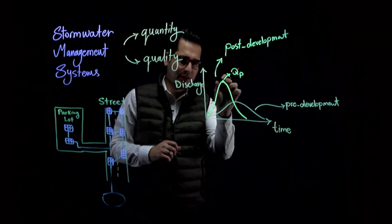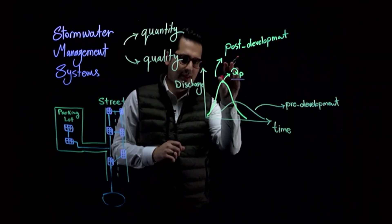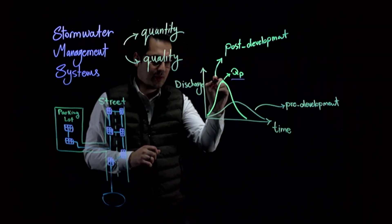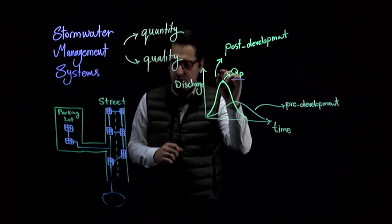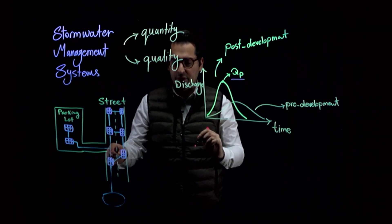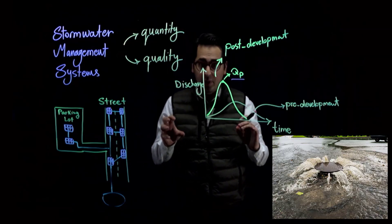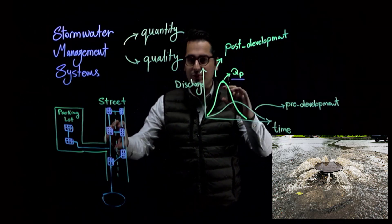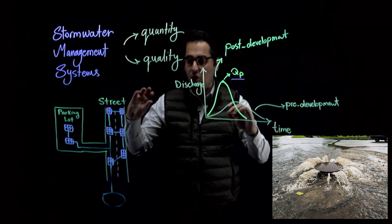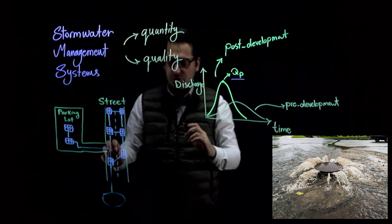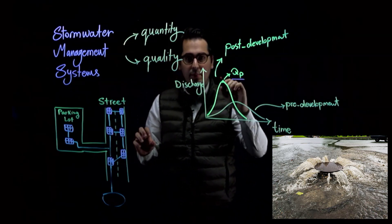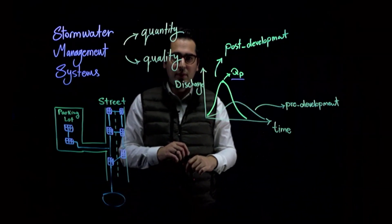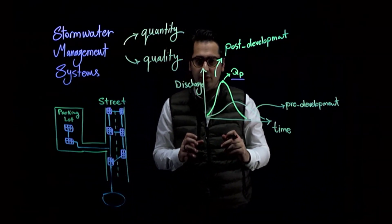This post-development peak discharge, Qp, is something we want to avoid. Because this peak is very high, it has the potential to overwhelm the pipes — the pipes have a diameter, and this Q might be too large for them to handle. Also, this peak might cause erosion in the receiving body of water, such as a river.